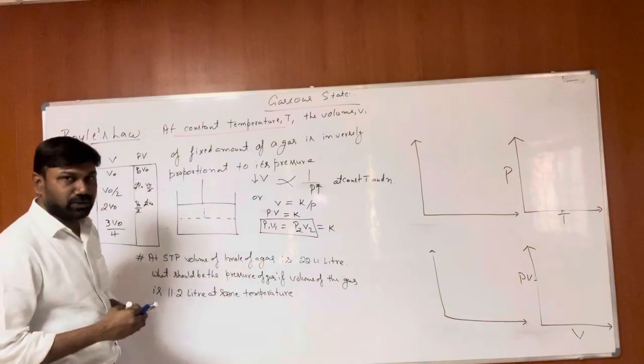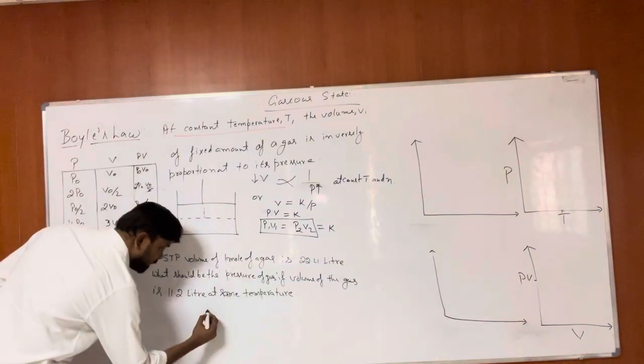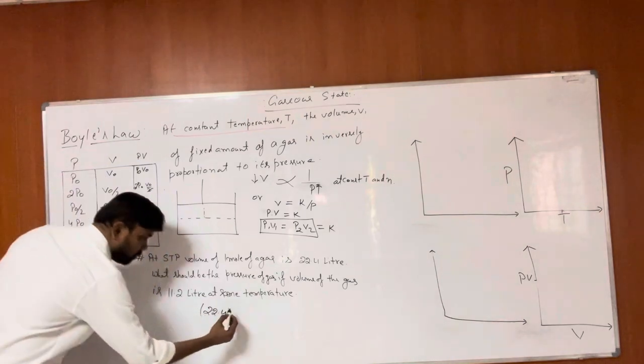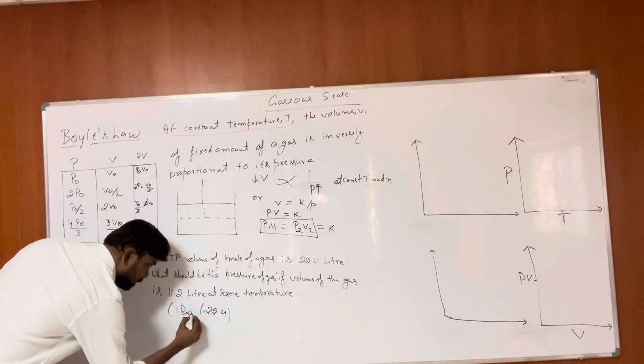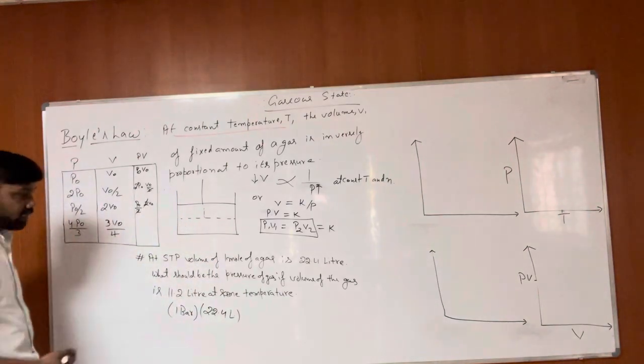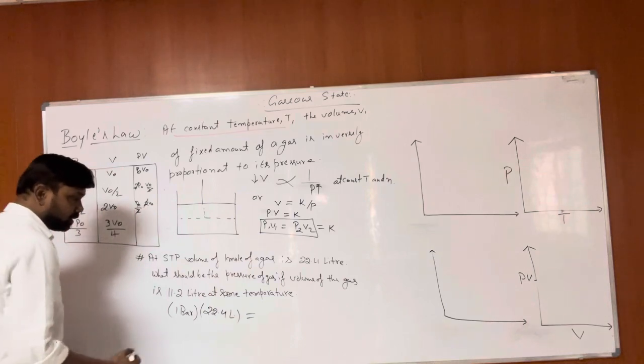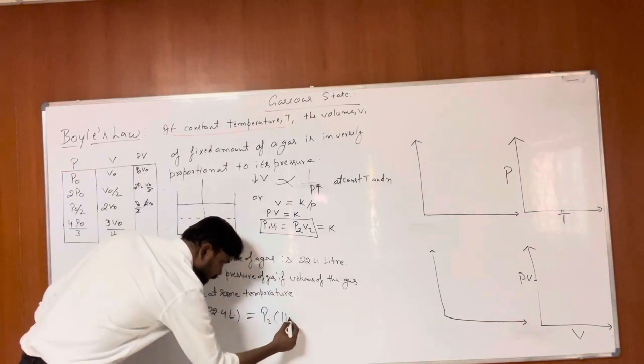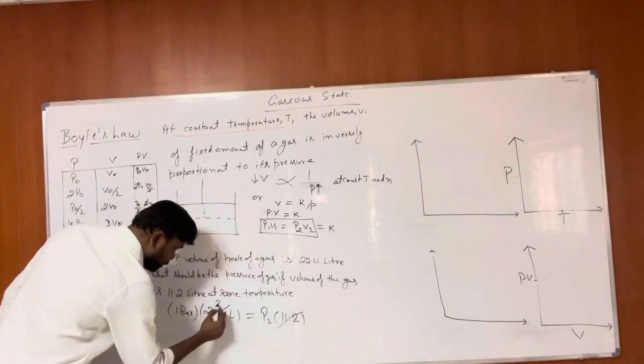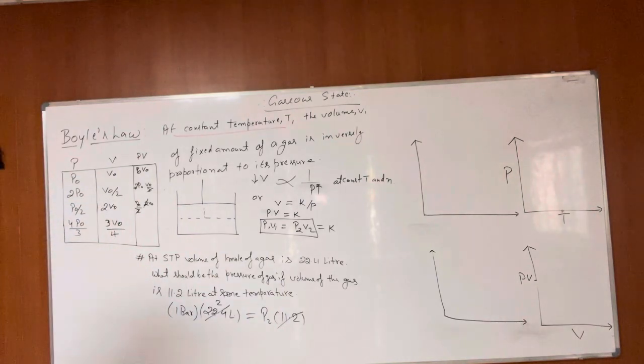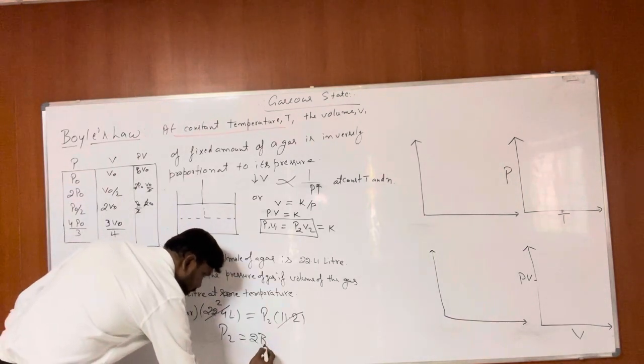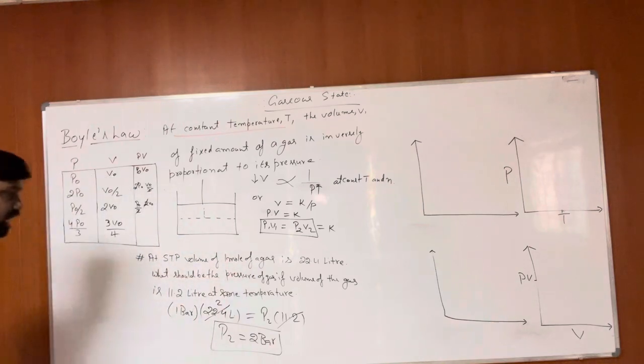Initial condition at STP: volume is 22.4L and pressure is 1 bar, so P1 is 1 bar and V1 is 22.4L. Final condition: volume is given as 11.2L. Since 11.2L and 22.4L differ by a factor of 2, we get P2 equals 2 bar. So this will be the final answer.